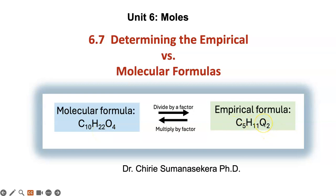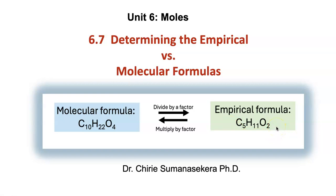The empirical formula is a multiple of the molecular formula. For example, if you multiply this by 2, then you get the molecular formula. So to find the empirical formula, you must divide the molecular formula by a factor. And to find the molecular formula, you must multiply the empirical formula by a factor. We are going to use those connections today to do computations.